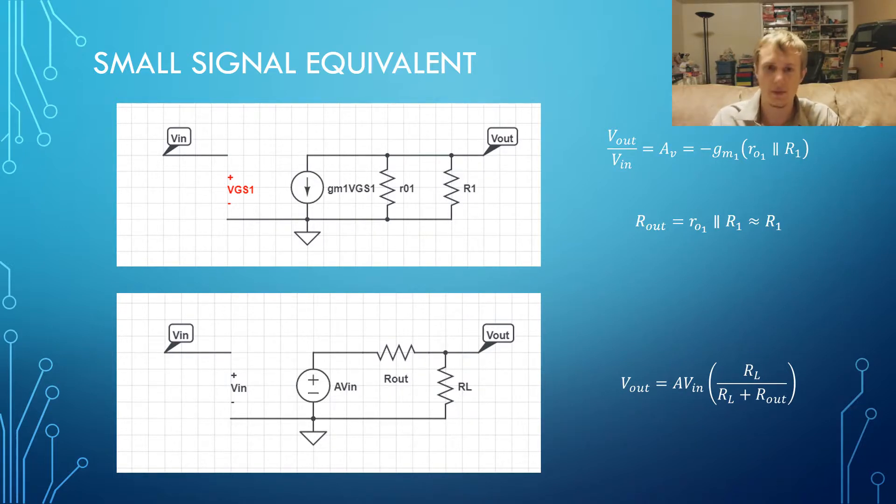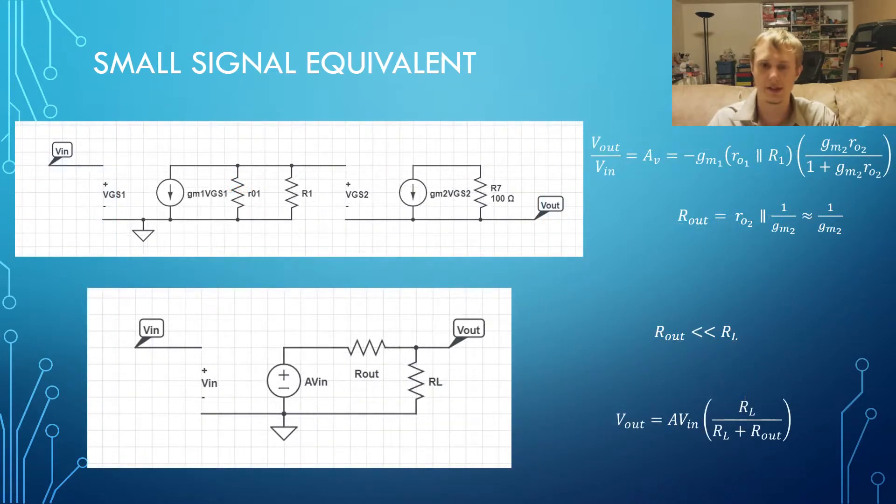Now if we add the speaker to the circuit, which has a very small resistance, we see why this second transistor is so necessary. Our equation for the output voltage will be Vout equals Avn RL divided by RL plus Rout. So without the second transistor, most of the voltage gain will be dropped across Rout and very little will drop across our load.